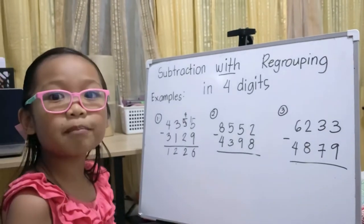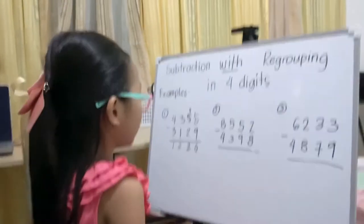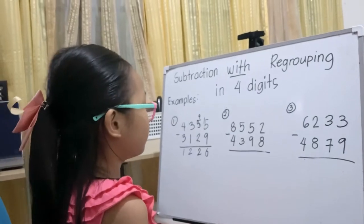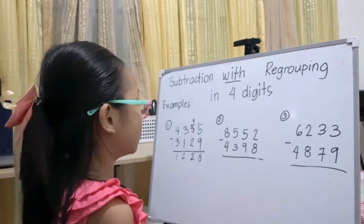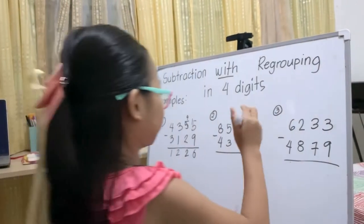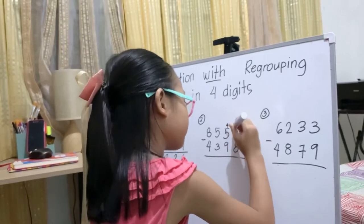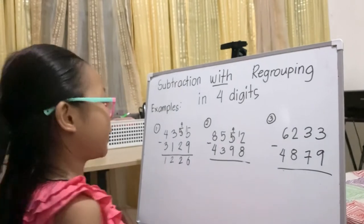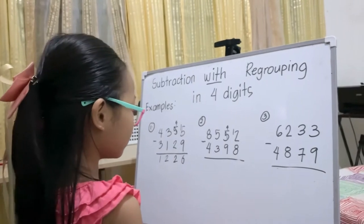Example number two: 8,552 minus 4,398. Two becomes 12, and five becomes four.